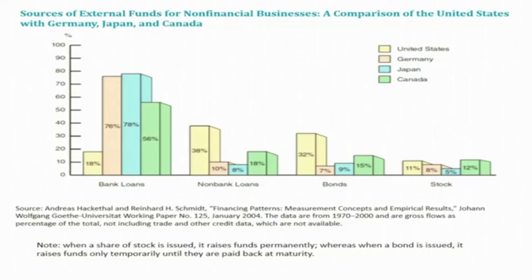Look at this figure. It shows the sources of external funds for non-financial businesses — a comparison of the United States with Germany, Japan, and Canada. There are four major sources of external funds for non-financial businesses: bank loans, non-bank loans, bonds, and stock.